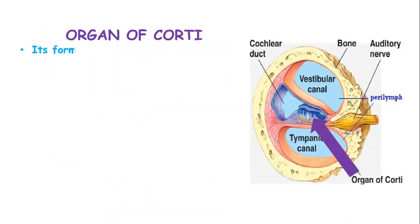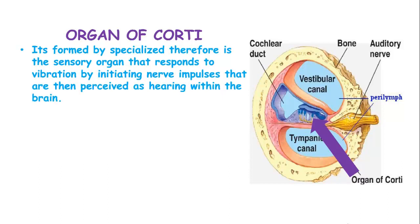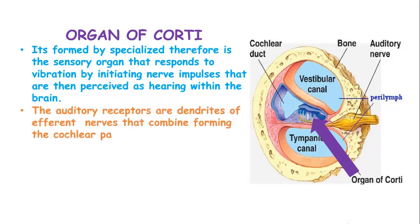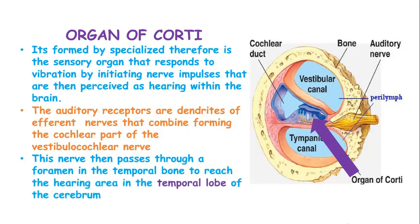The organ of Corti is located in the cochlea and is formed by specialist cells. It is the central organ which responds to vibration by initiating nerve impulses that are then perceived as hearing within the brain. The auditory receptors are dendrites of afferent nerves which combine, forming the cochlear part of the vestibulocochlear nerve. This nerve then passes through the foramen of the temporal bone to reach the hearing area in the temporal lobe of the cerebrum.